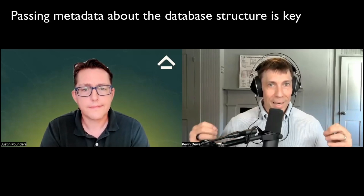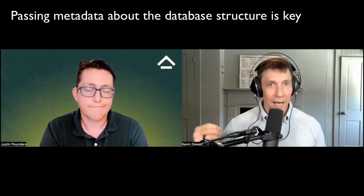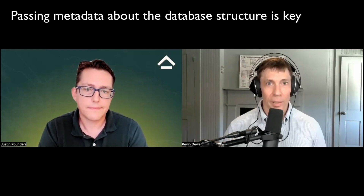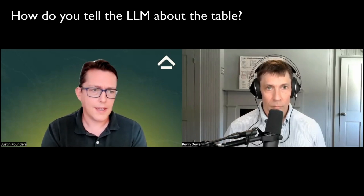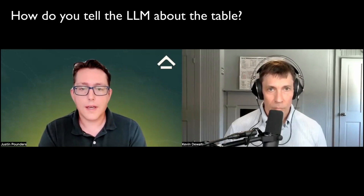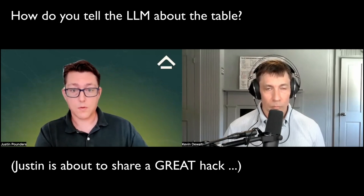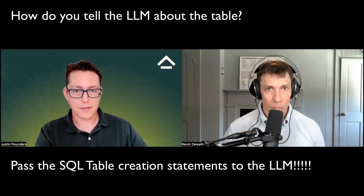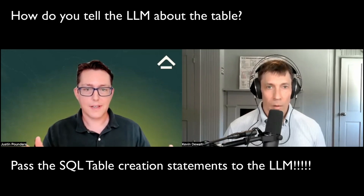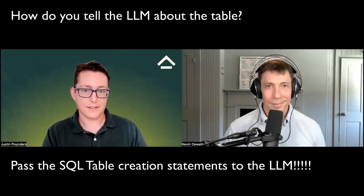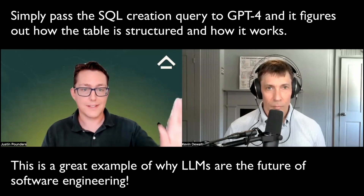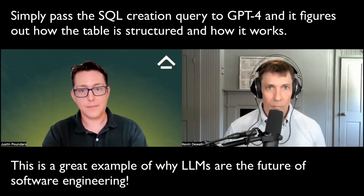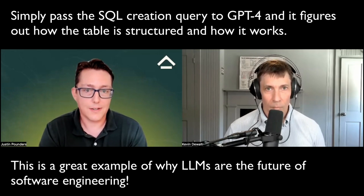Metadata about the tables is key to getting the LLM to understand what's happening. Just passing column names without other information probably isn't going to work very well. We introspected the SQLite database and pulled out the SQL creation statements — statements that specify what's a primary key and what's a foreign key and how the references work. The LLM is smart enough to look at those SQL creation statements and understand how to join tables on the appropriate column names to pull together the correct SQL query.